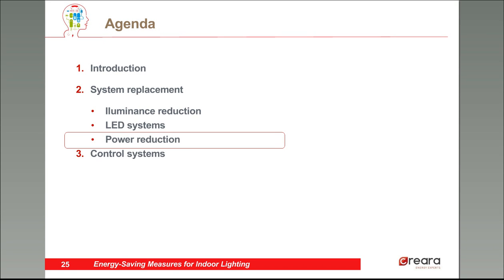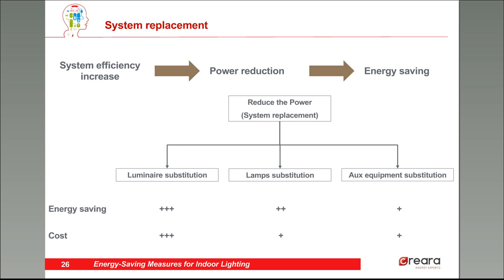Going back to saving possibilities, we talked about illuminance reduction. Now we're going to analyze power reduction by efficiency increase. If the energy efficiency of the system is increased by replacing the luminaire, the lamp, or even the auxiliary equipment, the power and energy consumption are reduced. Replacing the luminaire is more expensive but the energy savings are also bigger. If we substitute the lamp but not the luminaire, we can have some problems with light distribution and heat dissipation. We have to consider that if a luminaire is designed to work with a fluorescent lamp and we change it to a LED, the luminaire performance is worse.